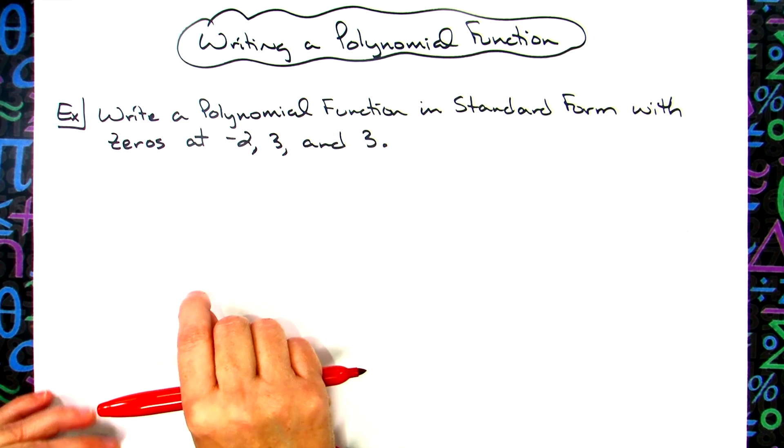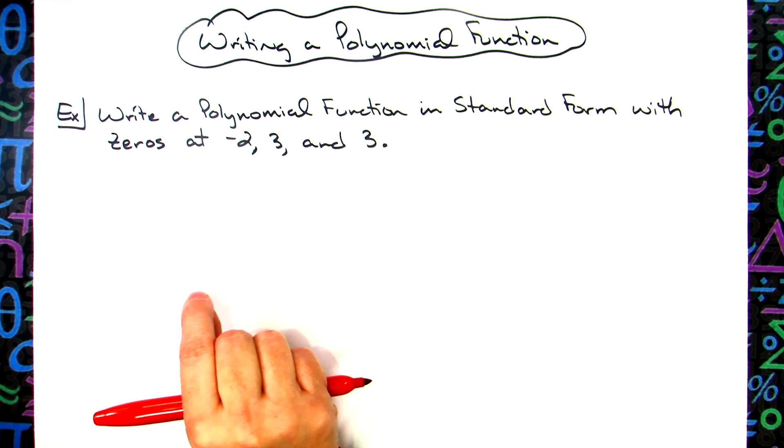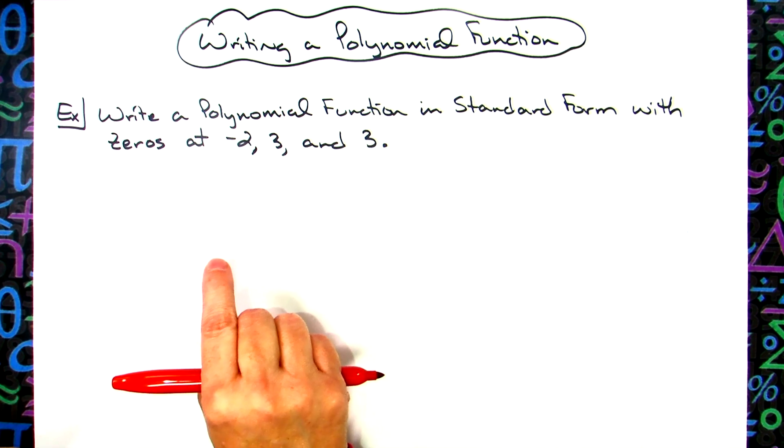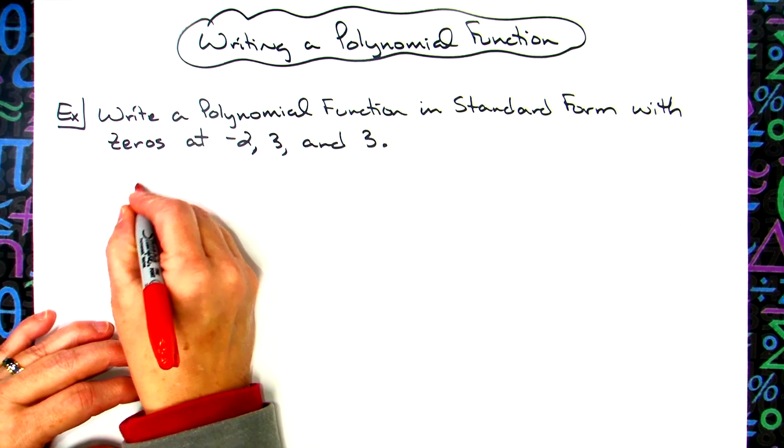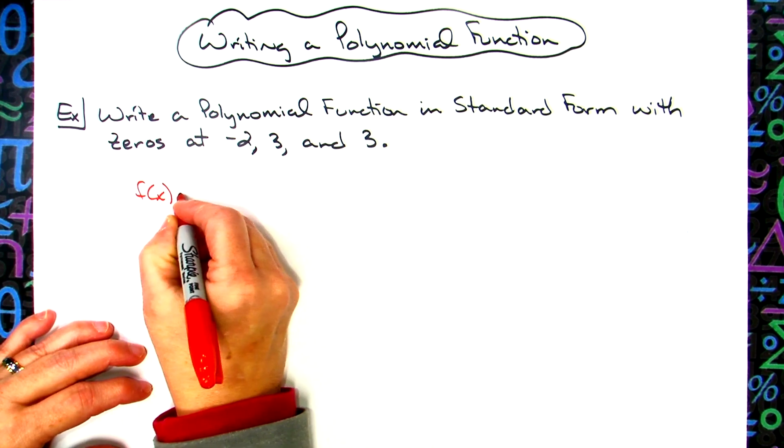What you have to realize is that when you have a zero, the easiest way to do this is to take that zero and write it as a factor. So my function f of x, my polynomial function...